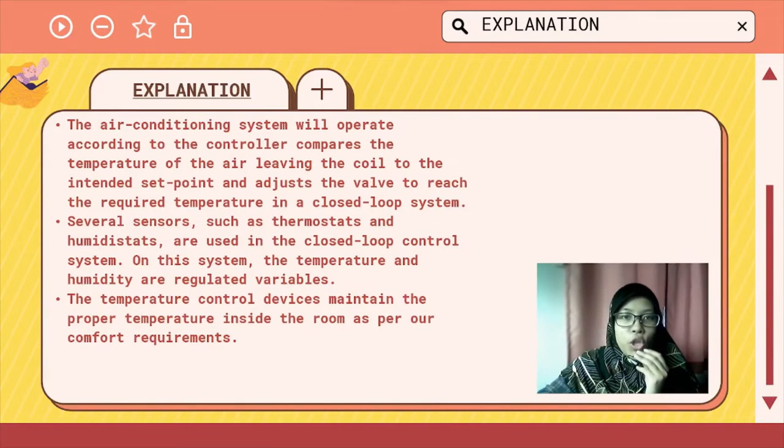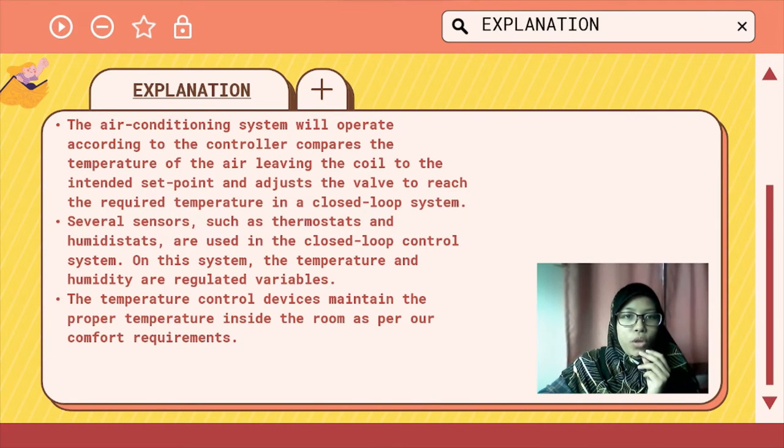The air conditioning system will operate according to the controller, which compares the temperature of the air leaving the coil to the intended set point and adjusts the valve to reach the required temperature in the closed loop system. The valve sensors, such as the thermostat and humidistat, are used in the closed loop control system. On this system, the temperature and humidity are regulated variables. The temperature control devices maintain the proper temperature inside the room as per our comfort requirements.